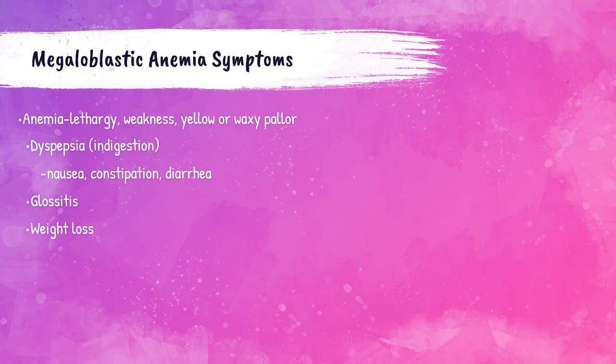Patients with megaloblastic anemia will have straightforward anemia symptoms: fatigue, lethargy, and weakness. They can be pale or have a yellow or waxy pallor to their skin. These patients may have indigestion with nausea, diarrhea, or even constipation. Glossitis — an inflammation of the tongue — may also be present along with unexpected weight loss.